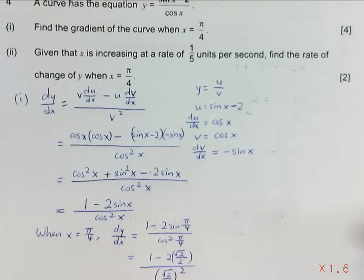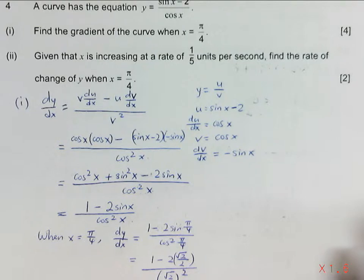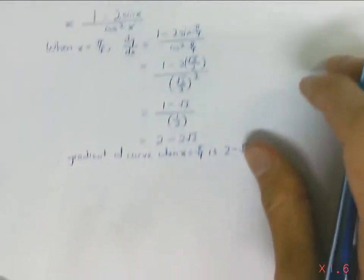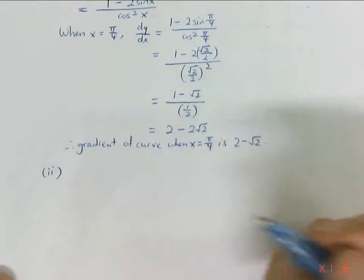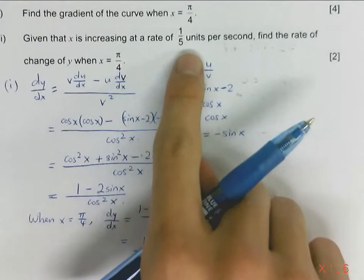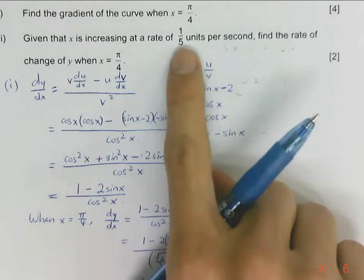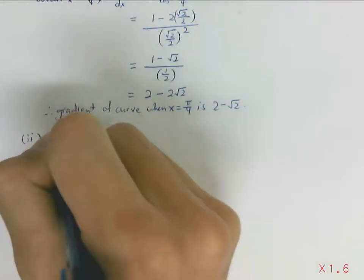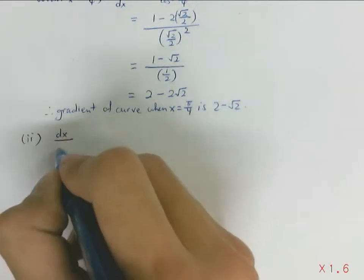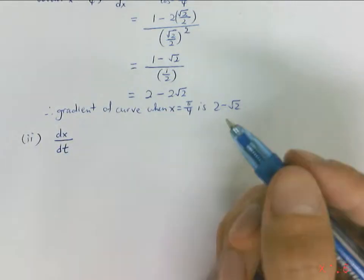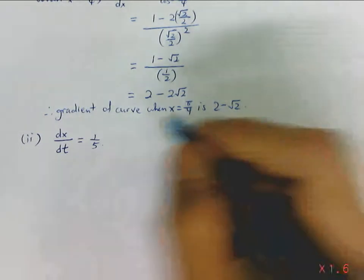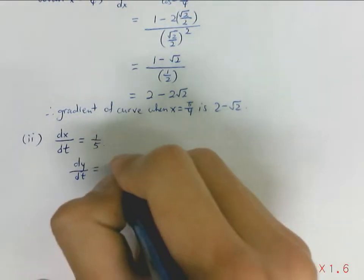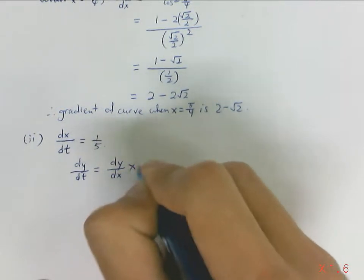Now part 2 asks us to find the rate of change of y. So we have to use the rate of change formula in this part. The given information is that the rate of change of x is increasing at 1/5 units per second. So if it's increasing, you just leave it as positive. And you simply write rate of change of x, dx/dt. Since it's rate, the denominator has to do with the time factor. dx/dt equals 1/5. So following rate of change, dy/dt will be dy/dx times dx/dt.